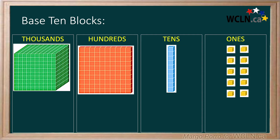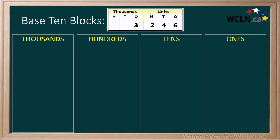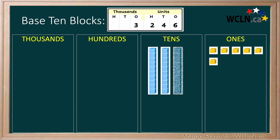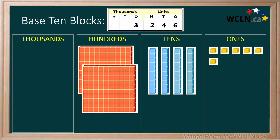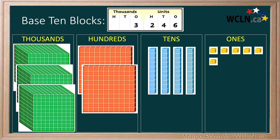How can we use this to represent 3,246 cougars? Let's use the place each digit is in to choose the right blocks. The smallest digit, 6, is in the 1s place — we can start with 6 1s. The 4 is in the 10s place, so let's add 4 10s blocks, making 40. The 2 is in the 100s place — we need to add 2 100s blocks. The 3 is in the 1000s place, so 3 1000s blocks complete our number.